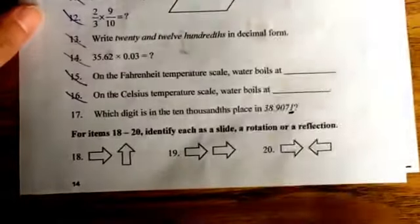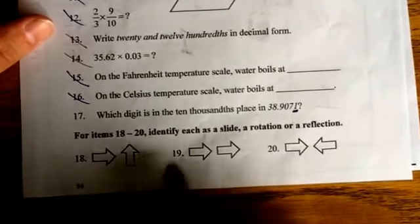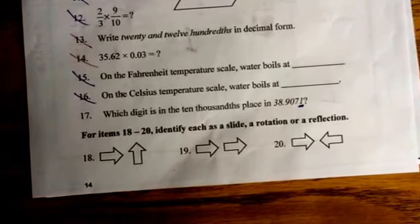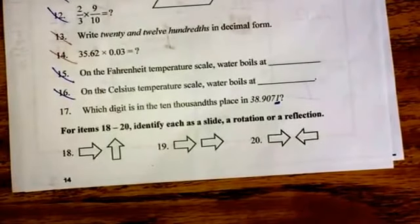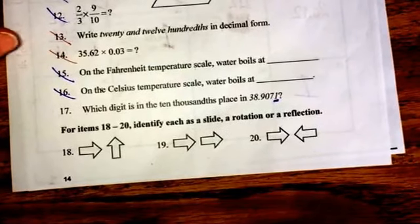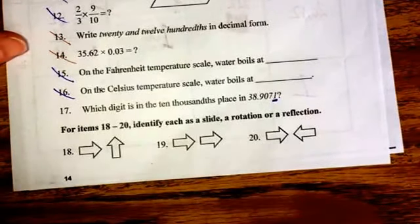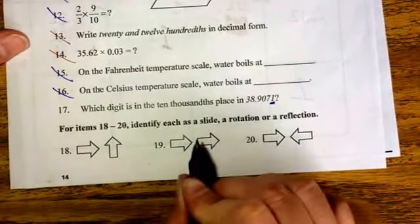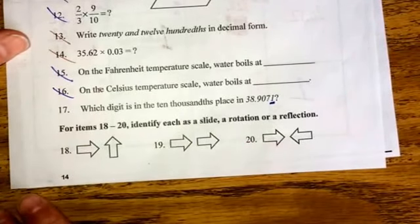Alright, number 18 through 20. 18, 19, and 20, I'm going to write them on the front here. They're asking us to identify each as a slide, a rotation, or a reflection. Okay, so let's think about these. A slide means that you're in one spot and then you just slid to another.